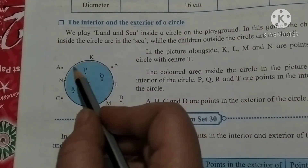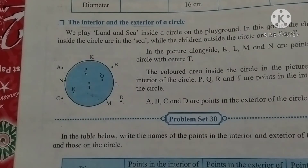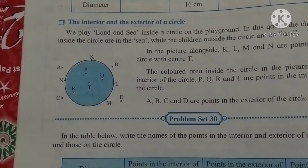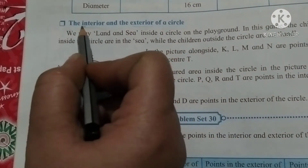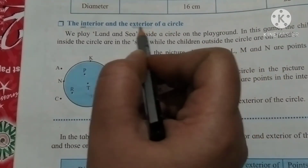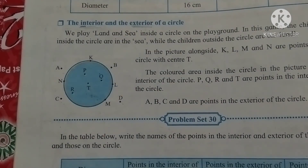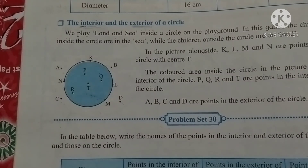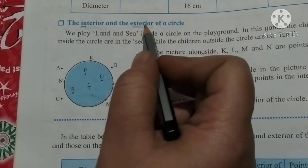The points which are on the circle are on the circle only. The name itself gives the meaning — 'in' means inside, 'exterior' means exit, outside. Like when we go to any shop or mall, they have 'in' and 'exit'. Same like that: interior means inside, exterior means outside the circle.